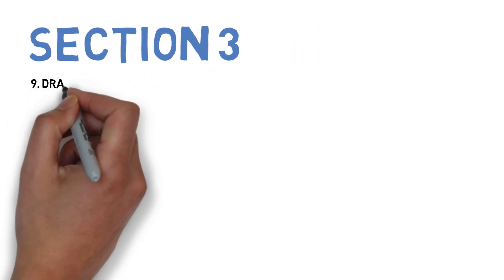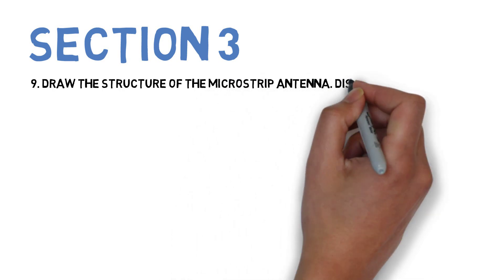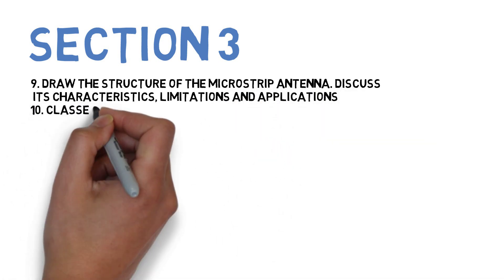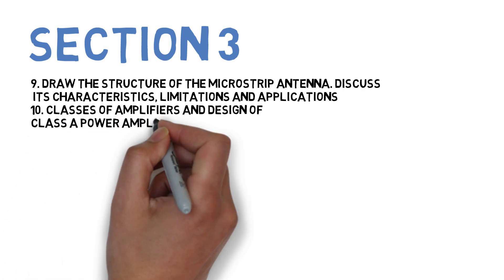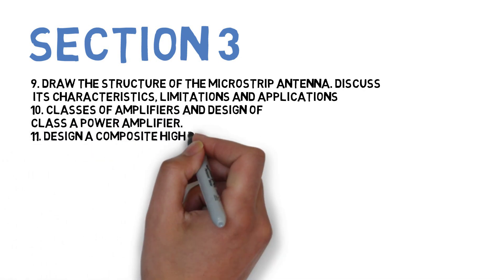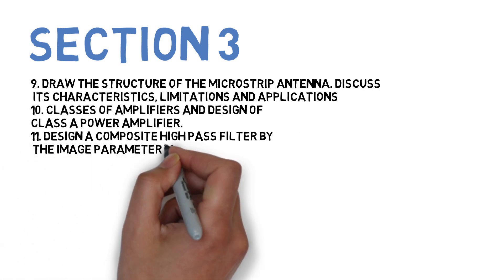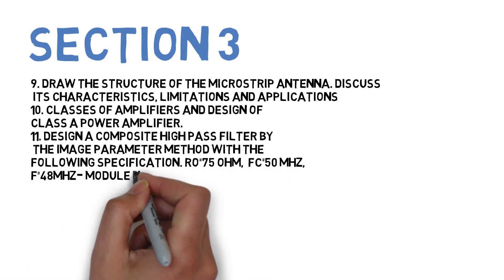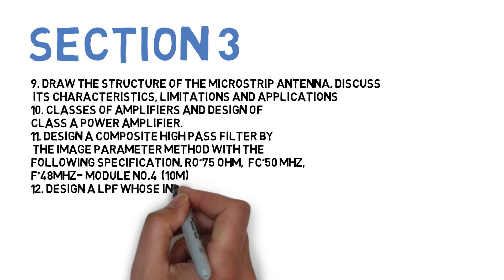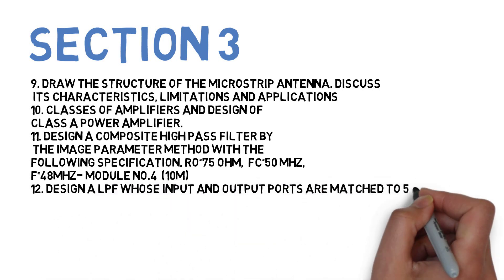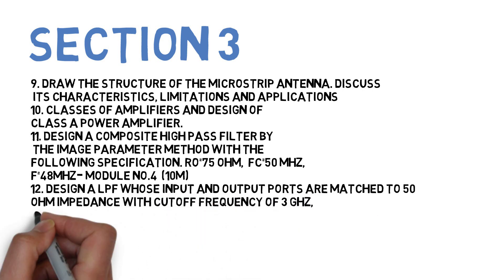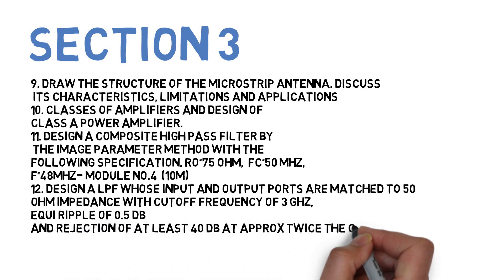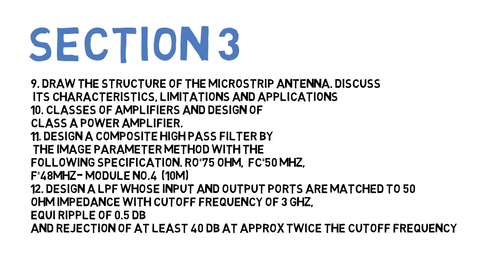For Section 3, four questions again. First: draw the structure of a microstrip antenna, give its characteristics, limitations, and applications. Second: classes of amplifiers and design a Class A power amplifier. Third: design a composite high-pass filter by image parameter method using specifications R0 = 75 ohm, Rc = 50 MHz, R∞ = 48 MHz. Fourth: design an LPF whose input and output ports are matched to 50 ohm impedance, cutoff frequency 3 GHz, equiripple 0.5 dB, and rejection of at least 40 dB at approximately twice the cutoff frequency.